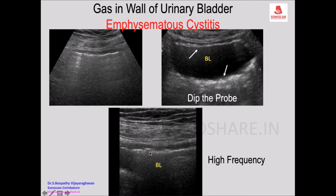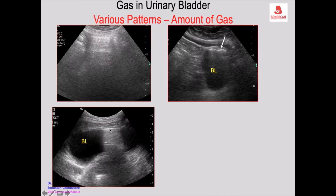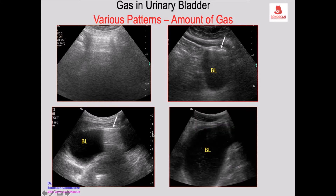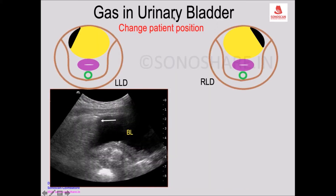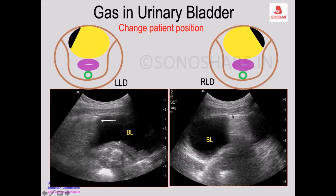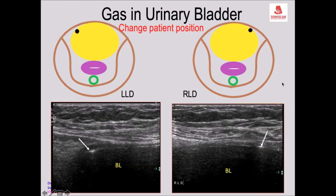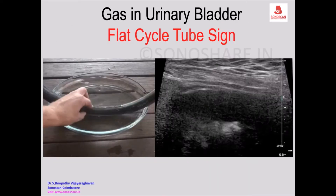Gas within the wall will remain the same in spite of pressure, showing that it is well contained within the wall - this happens in emphysematous cystitis. Here you see most of the bladder is normal, but you see a single bubble of gas that moves to the left side, and you will see the gas column in the left side with dirty shadows within the domain of the urinary bladder.